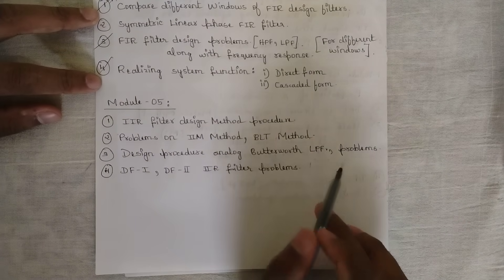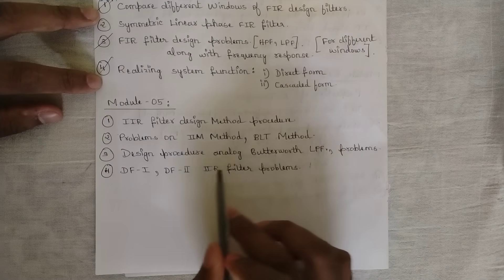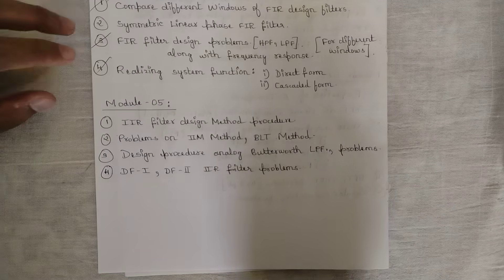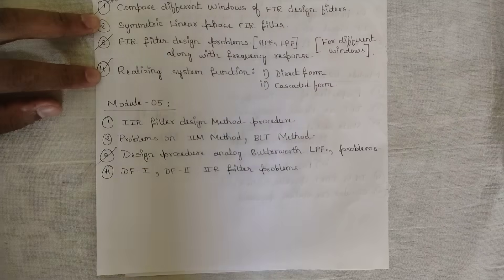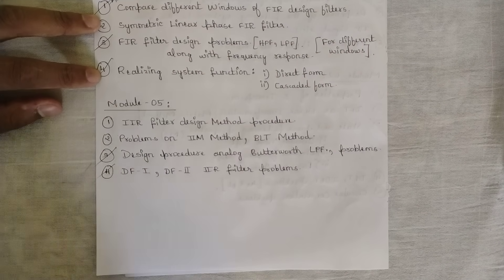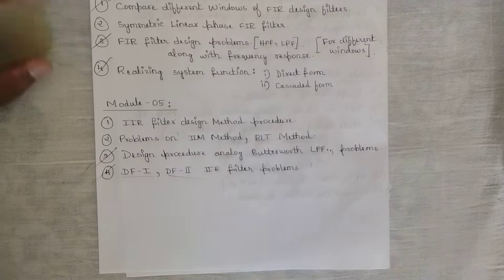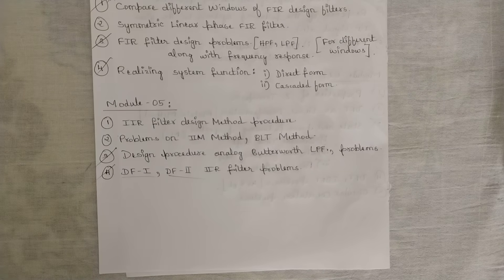The design procedure of analog Butterworth filter — any one of analog or digital might be asked, but there are high chances of the analog Butterworth filter design procedure being asked. Go through it. And one problem from the Butterworth filter is one hundred percent sure — please focus on it. Also, one hundred percent confirmed is IIR filter problems of DF1 and DF2 — that is direct form 1 and direct form 2. They will give you the system function and you should represent it using DF1 and DF2 structures.